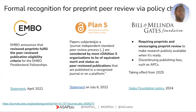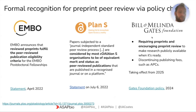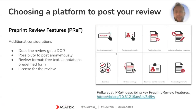Plan S, an independent body, stated that papers subjected to a journal-independent standard review process — preprint peer review — are considered equivalent in merit and status to a peer-reviewed journal publication. More recently, the Bill and Melinda Gates Foundation announced that from January next year they will require all people they fund to post preprints and encourage preprint peer review. I think this is a good separation — mandating preprints and encouraging review is a good way forward. Interestingly, the Gates Foundation also announced they will discontinue paying article processing charges and publishing fees.